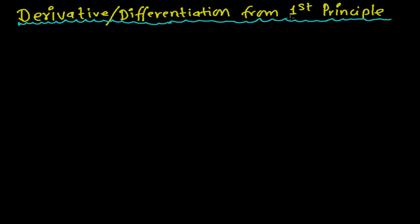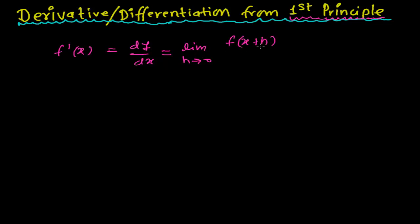So derivative and differentiation are both the same thing. Now, what is first principle? In the previous video, we learned to find the derivative of a function f(x). We write f'(x), or also dy/dx, is equals to limit when h tends to 0 — and somewhere in books you may see delta x tends to 0. Both h and delta x are the same thing, meaning a small change. It equals f(x+h) minus f(x), whole divided by h. This we learned in the previous video.